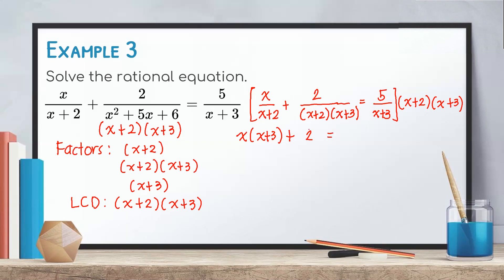Copy the equal sign. For the last term, the denominator is (x + 3), so (x + 3) at the LCD cancels, leaving us with 5 times (x + 2). Next, simplify by multiplying x into the binomial, giving x squared plus 3x, plus 2 equals 5 times (x + 2), which gives 5x plus 10.